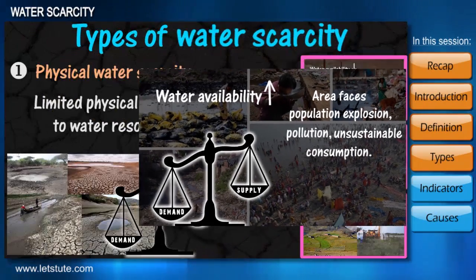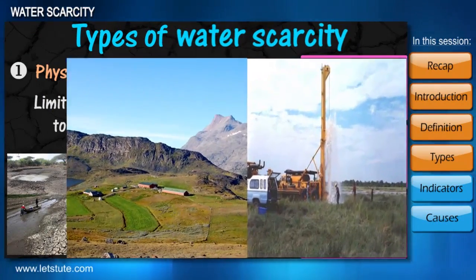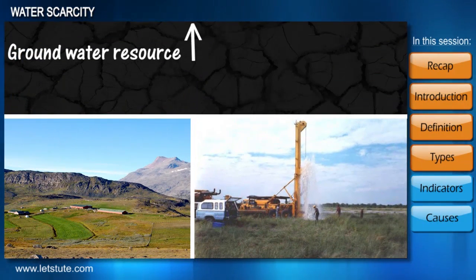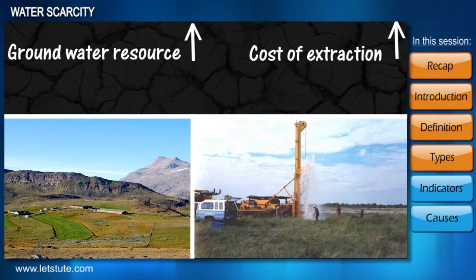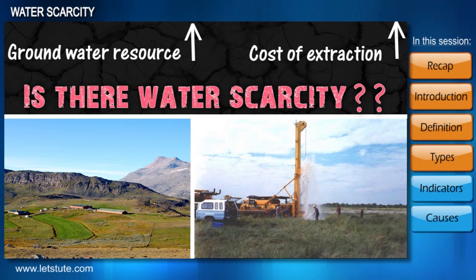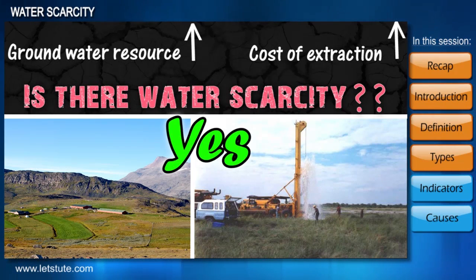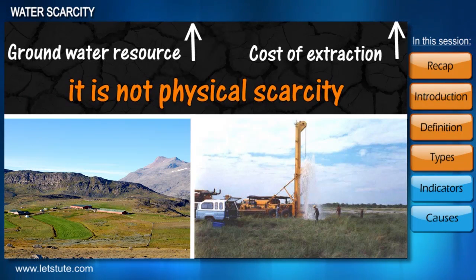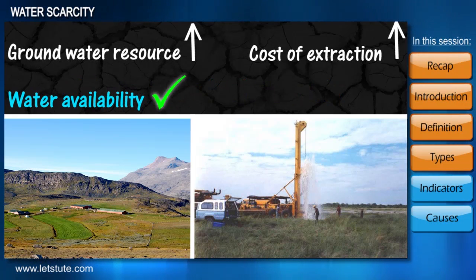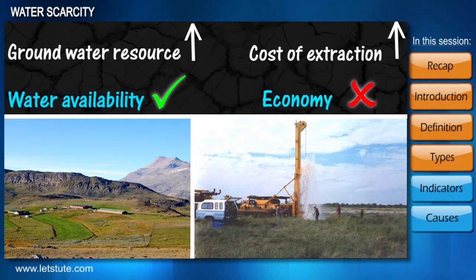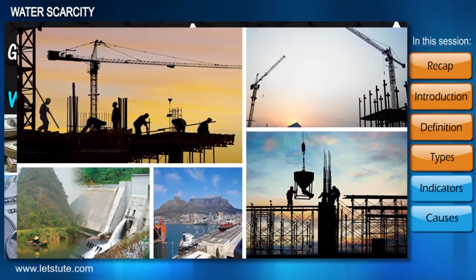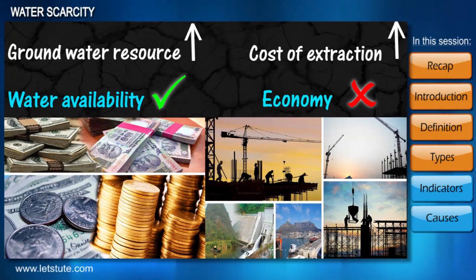In the third situation, there is sufficient groundwater resource but due to very high extraction costs, people are not able to use it. Can we call that place water scarce? Yes — but this is not a case of physical scarcity. There is water available, but due to economic constraints — lack of financial aid or inadequate infrastructure — people cannot access it.